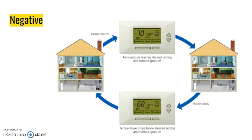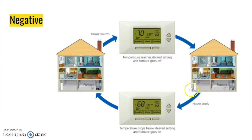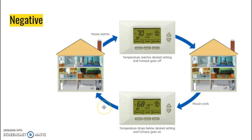A negative feedback loop would be your thermostat in your house. You set your thermostat — here we've got it set at 68. The house is at 70 degrees, so it's going to cool off until it hits 68. Then the AC is going to turn off. Gradually, your house warms up. Once it gets above 68 — in this case 70 — it's going to kick on again and cool it off. That's an example of a negative feedback loop: something changes that causes something to stop.